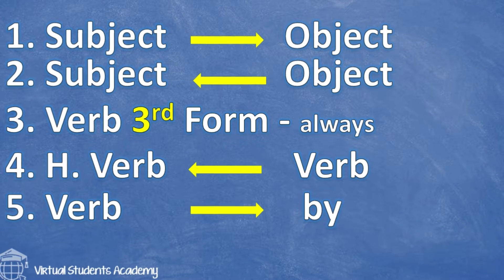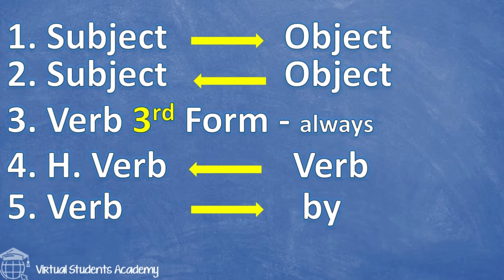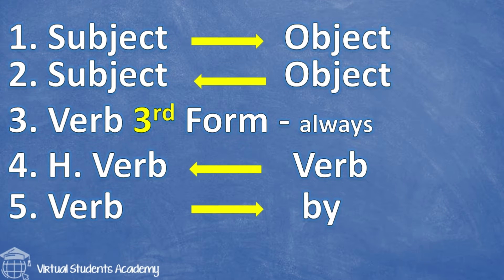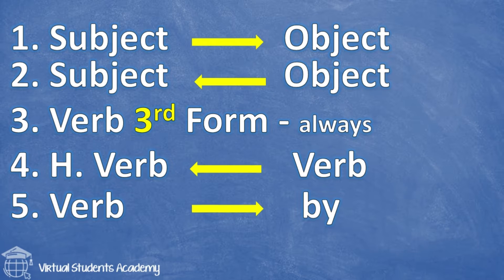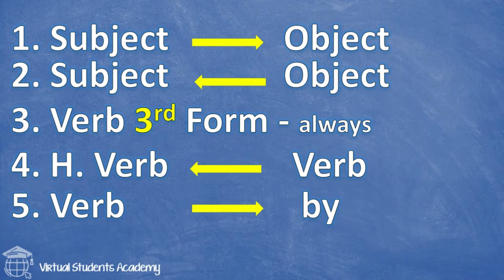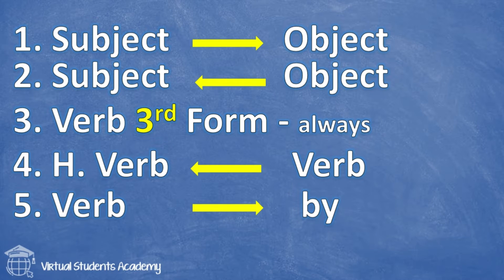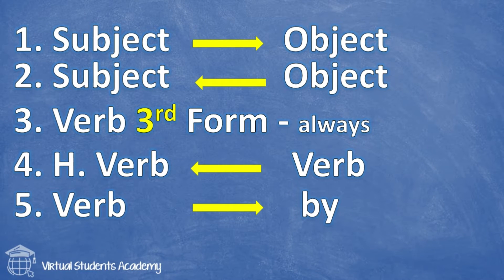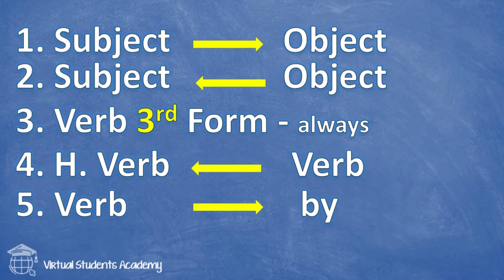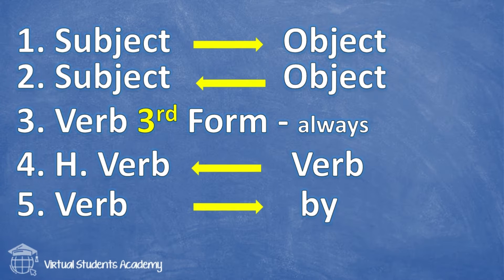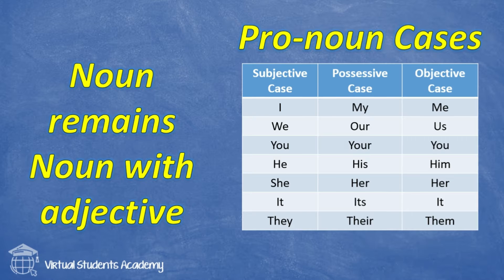Rule number three: the verb will always, always get its third form. Remember, third form always — it doesn't matter which tense you are in. Rule number four: a helping verb will come before the main verb. Rule number five: there will always be 'by' after the main verb.